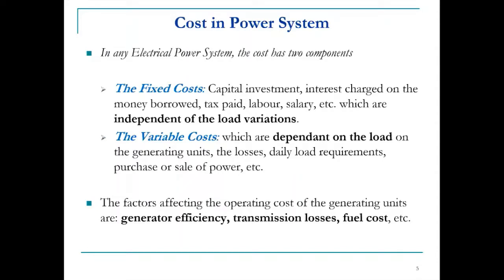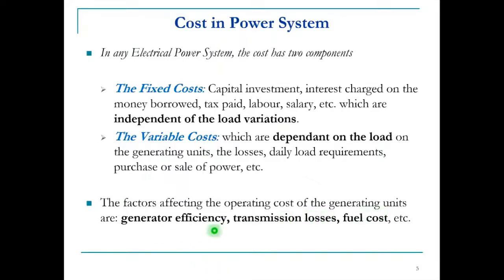The costs in a power system can be classified into two: fixed cost and variable cost. Fixed costs are independent of load variation and include capital investment, interest, tax, salary, labor, etc. Variable costs depend on the load — as active power generation increases, variable cost increases. The factors affecting operating cost include generator efficiency, transmission losses, and fuel cost.